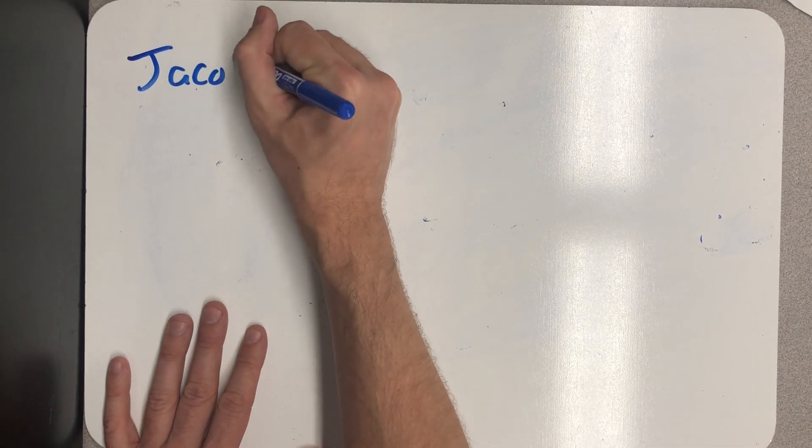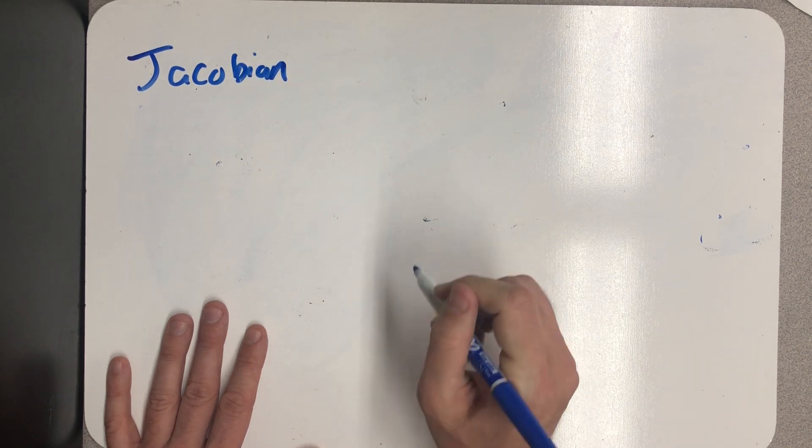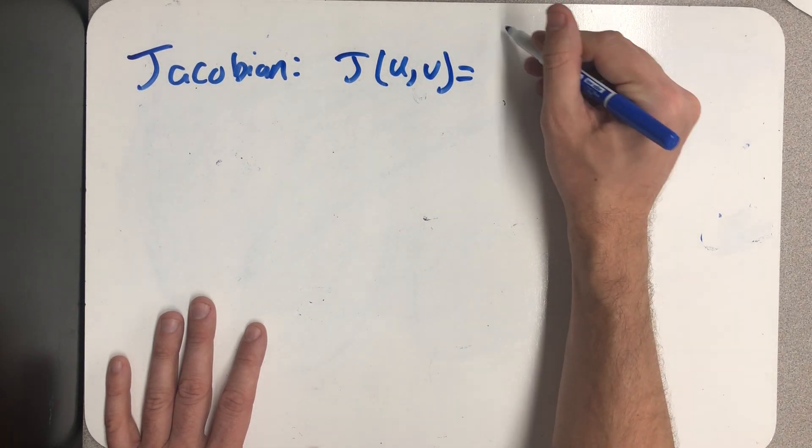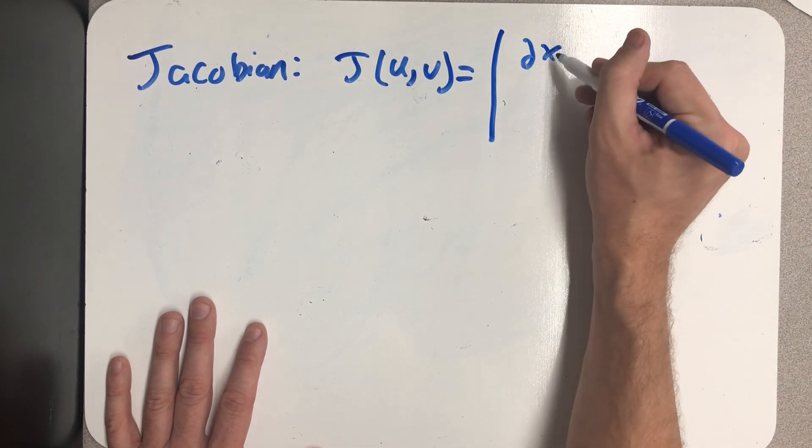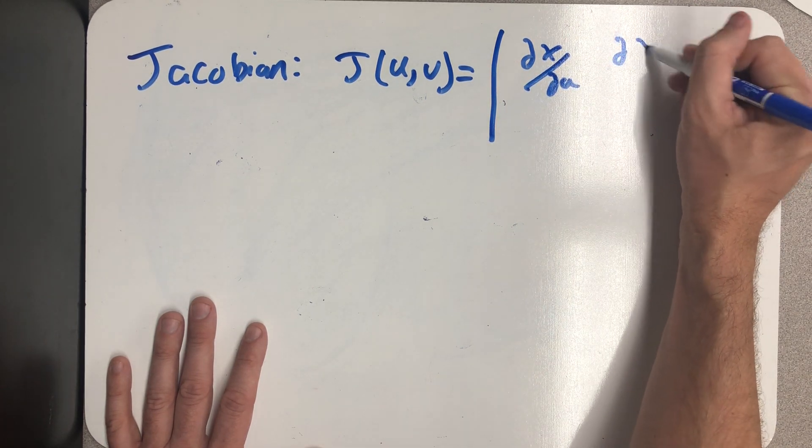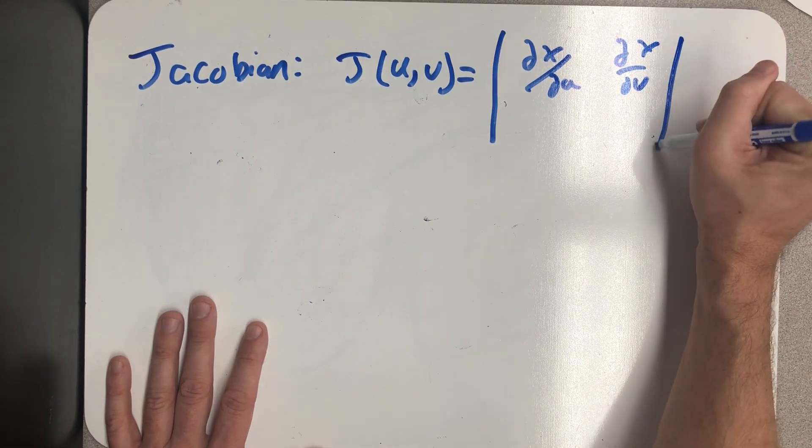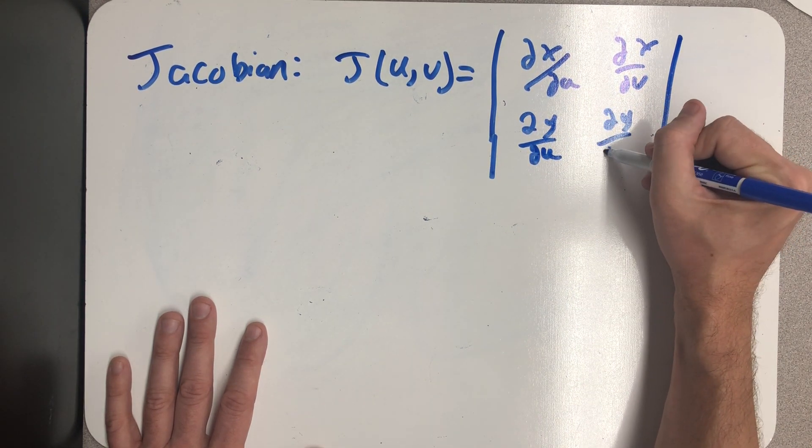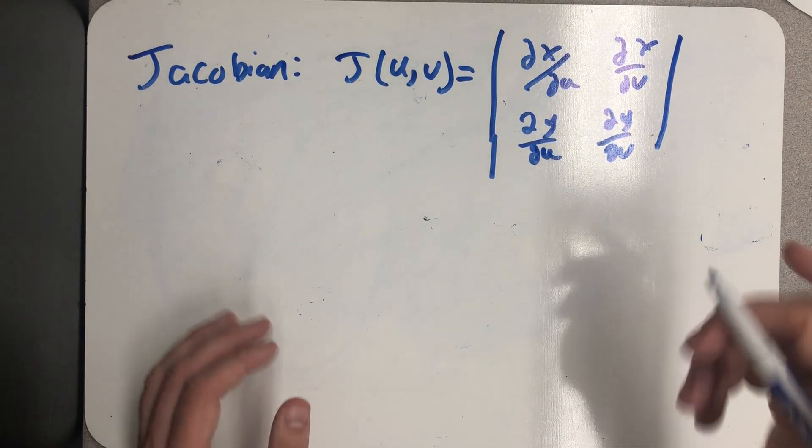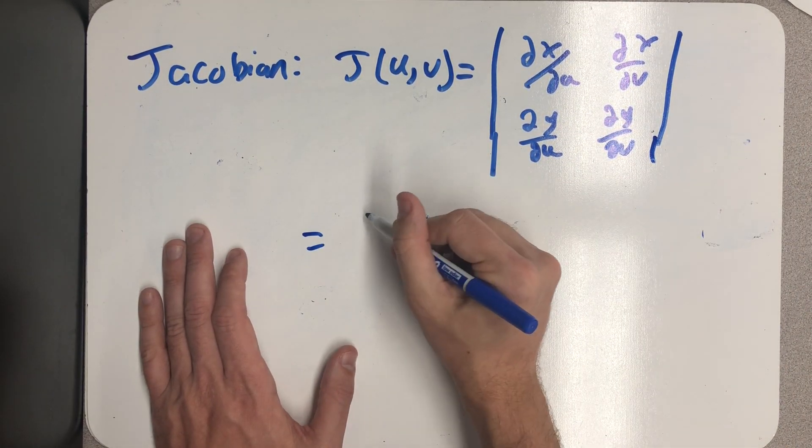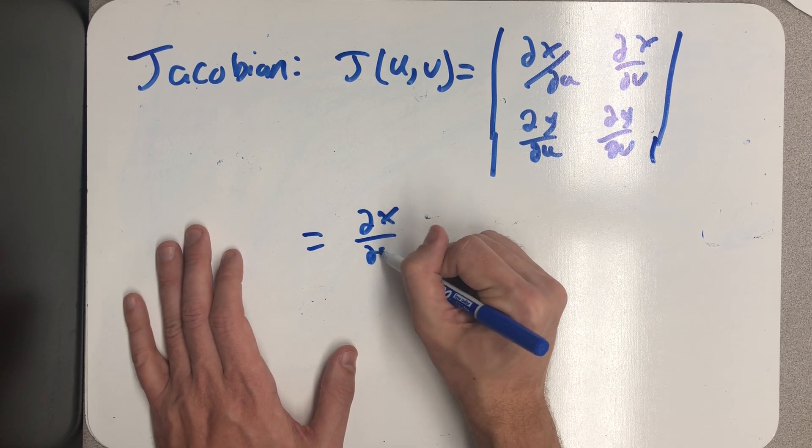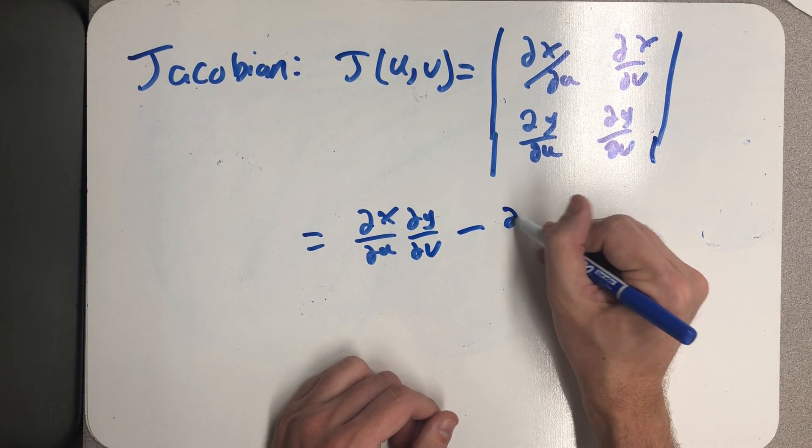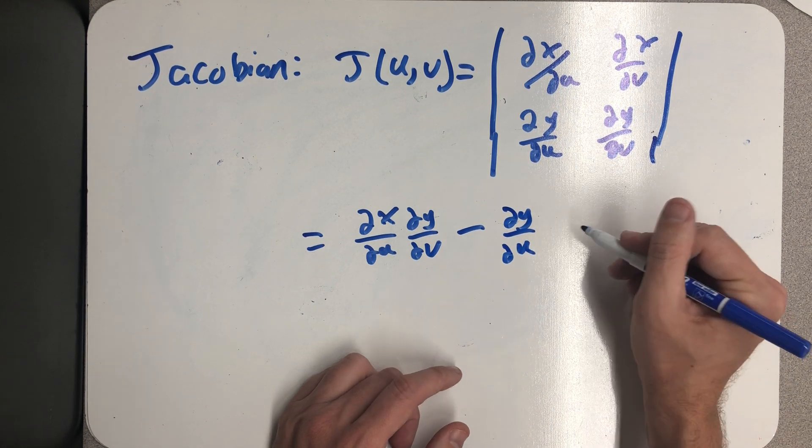And here it is. It's called the Jacobian, named after the mathematician Jacobi. J of (u,v) is equal to the partial of x with respect to u, the partial of x with respect to v, and then partial of y with respect to u and partial of y with respect to v. And then we take the determinant of this matrix. Well, when we were introduced to determinants, they were scaling factors. And this determinant of partial derivatives gives me my scaling factor for this substitution.